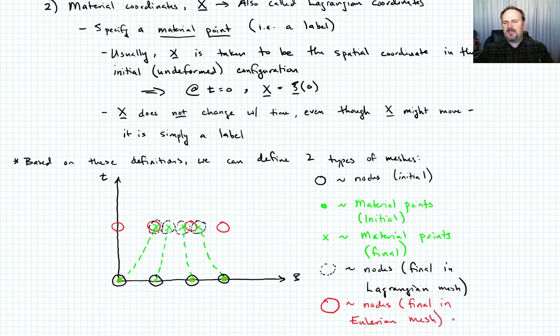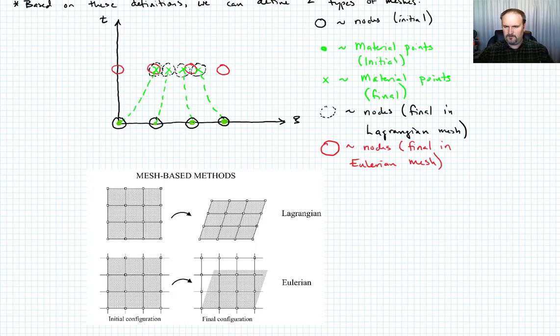So I hope that that's clear. In a Lagrangian mesh the nodes are attached to material points so the mesh deforms with the material. In an Eulerian mesh the mesh is fixed in space and it does not deform with the material rather the material sort of moves through the mesh. That's the distinction.